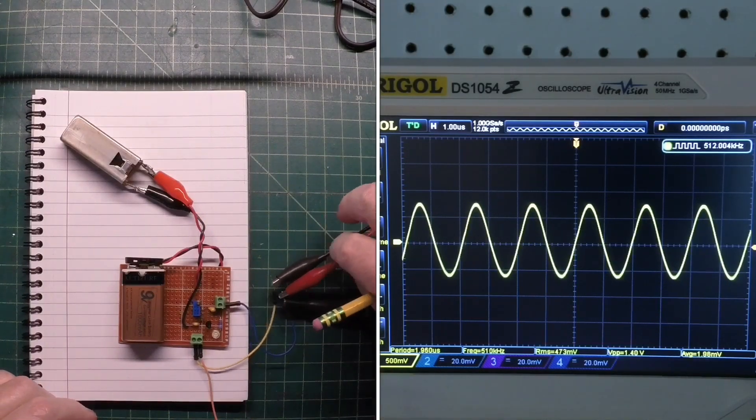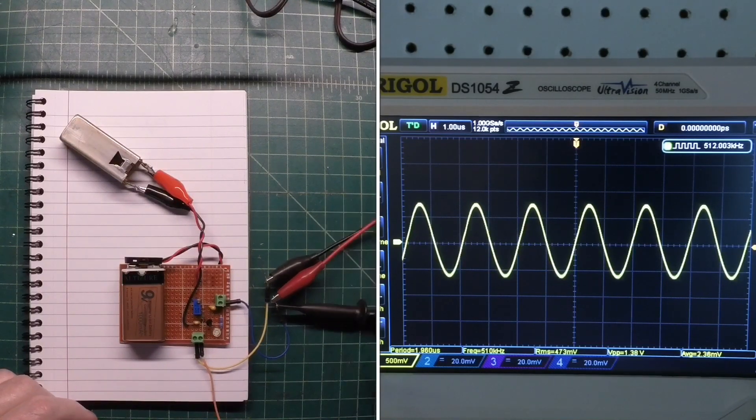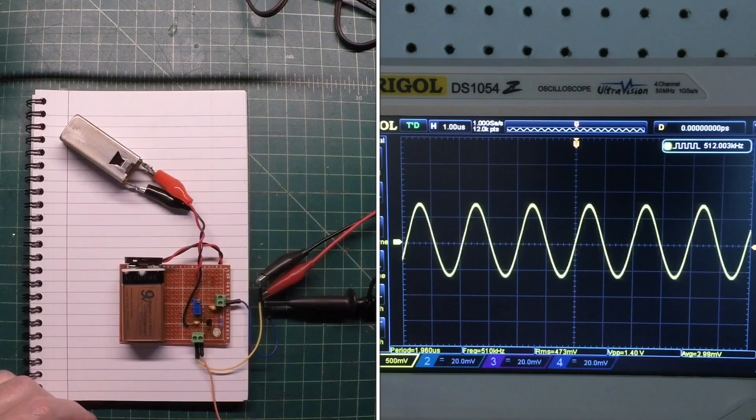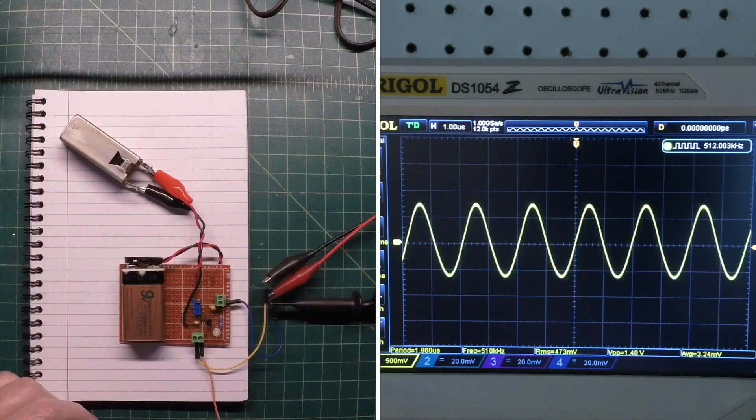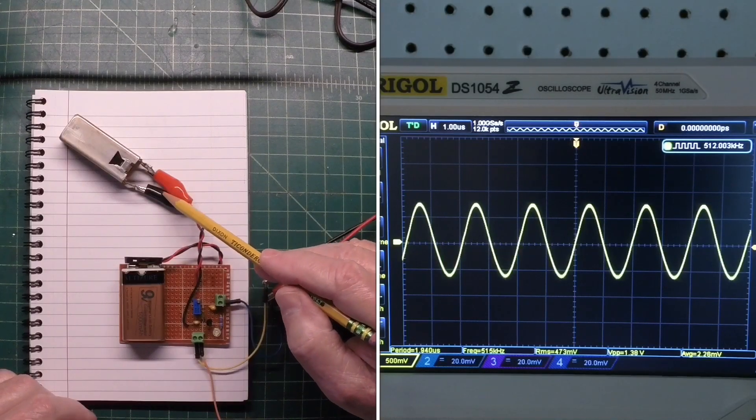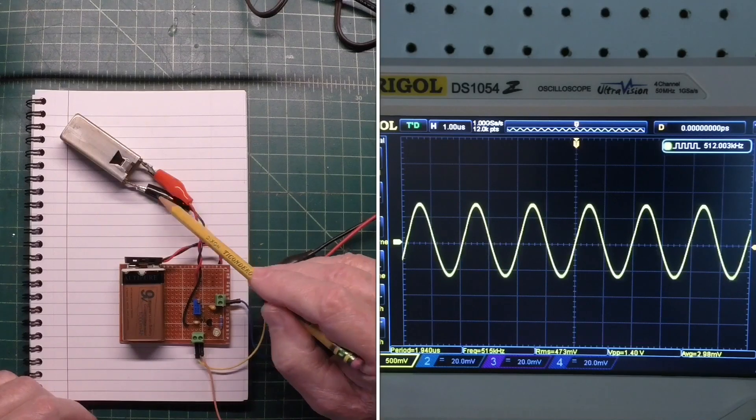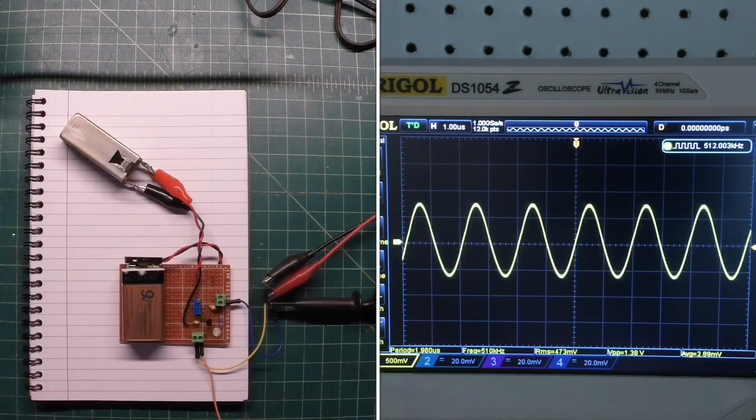My input signal here is coming from my signal generator, and the probe here is connected to the oscilloscope itself. And of course, I'm across the one side of the transformer. I think this is the primary connection, if I'm looking at that correctly.